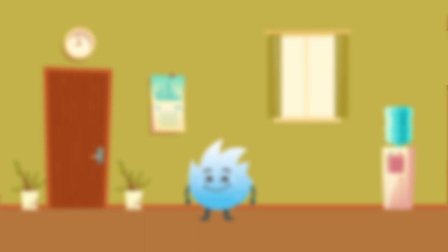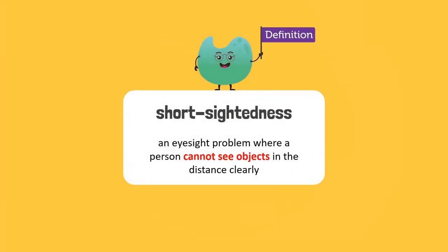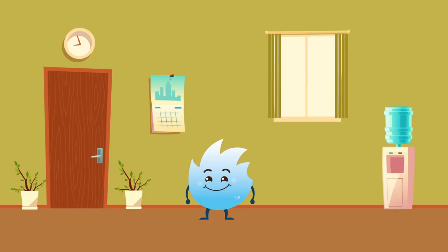I can't find my glasses so the whole room seems blurred. Why? I can see the room clearly. Well, I'm short-sighted. That means I can only see objects nearby, while objects that are far away appear blurred.